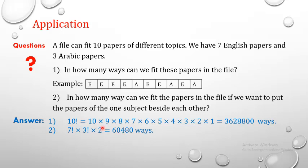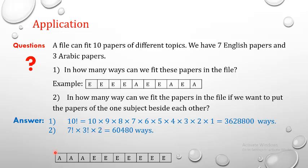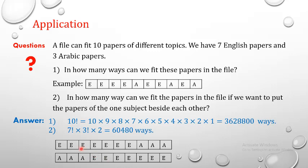Pay attention to why we multiply by 2. We have the 3 Arabic papers with 3! permutations and the 7 English papers with 7! permutations. We multiply by 2 because there is another way to arrange the groups: we can start with English first, or start with Arabic first — hence times 2.